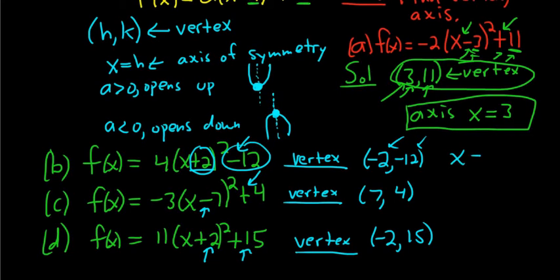And the axis for all of these is x equals, and it's always this number here. So here it's x equals negative 2. Here it's x equals 7. Here it's x equals negative 2.